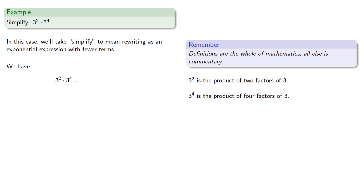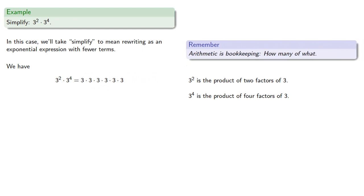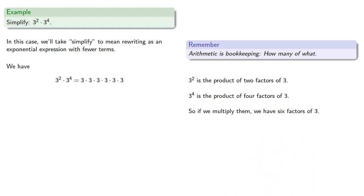So we can rewrite our exponential expressions. And remember, arithmetic is bookkeeping — how many of what? We have six factors of three, so we can rewrite this in exponential notation.